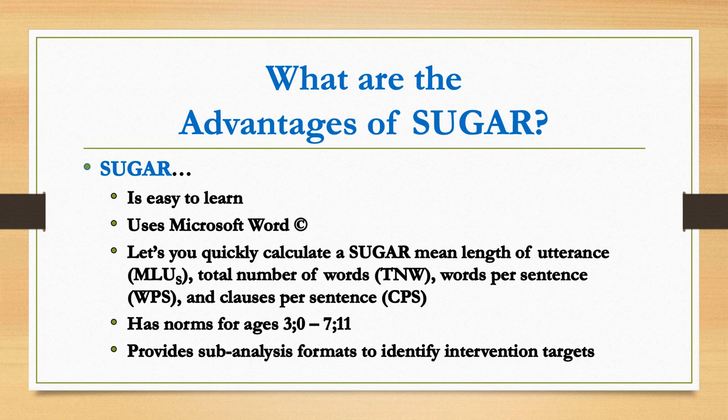In addition to sample collection ideas, SUGAR enables you to quickly calculate four SUGAR metrics, including SUGAR mean length of utterance, or MLUS, total number of words, average words per sentence, and average clauses per sentence. SUGAR contains normative values for each metric for children three to eight years of age that can help you in determining if a child has a possible language impairment. In addition, SUGAR has sub-analysis formats to help you identify potential intervention targets.